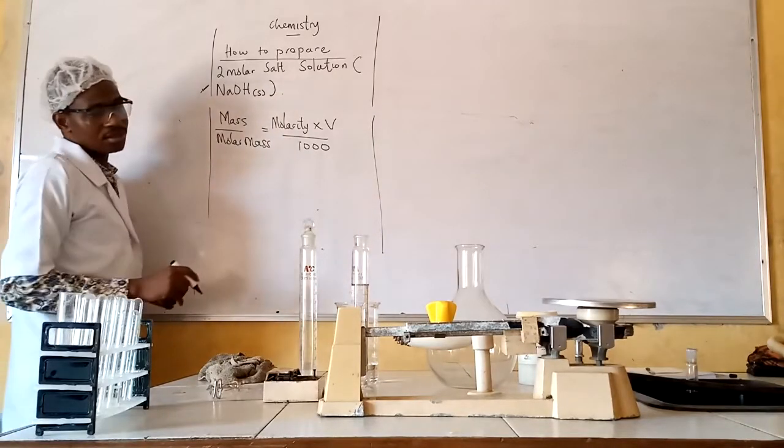Now how are we going to do that? For us to do that, there are certain things we need to understand. The formula we need to recall is mass over molar mass equals molarity times volume divided by 1,000. Since we are preparing it inside 100 cm³ of our volumetric flask, that will be our volume. Therefore we have to calculate the mass we are going to weigh to add to this 100 cm³ of distilled water.